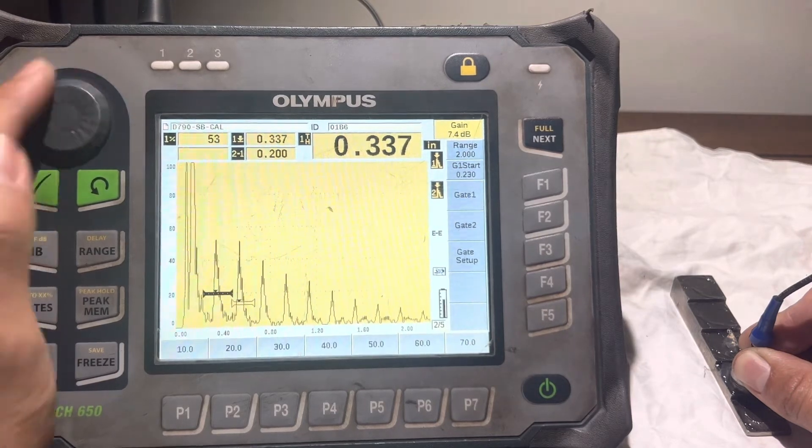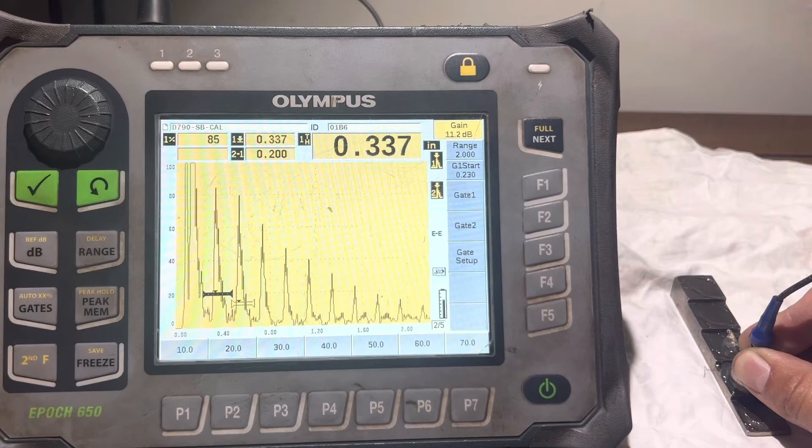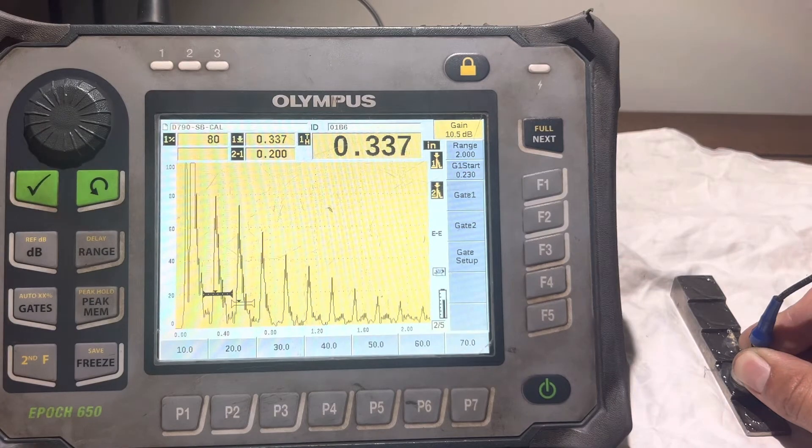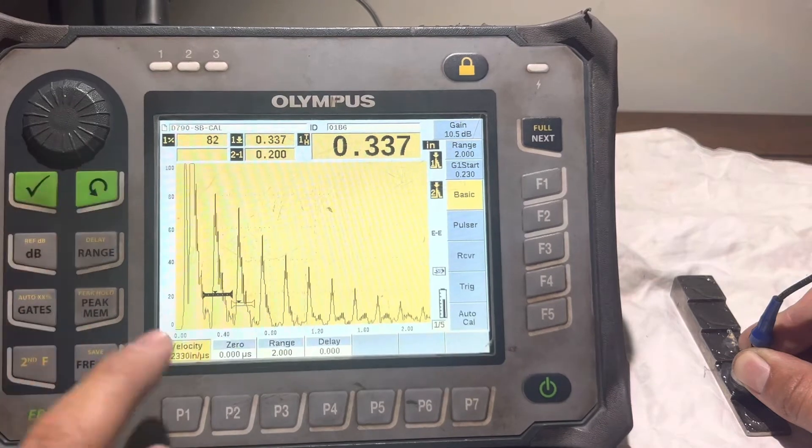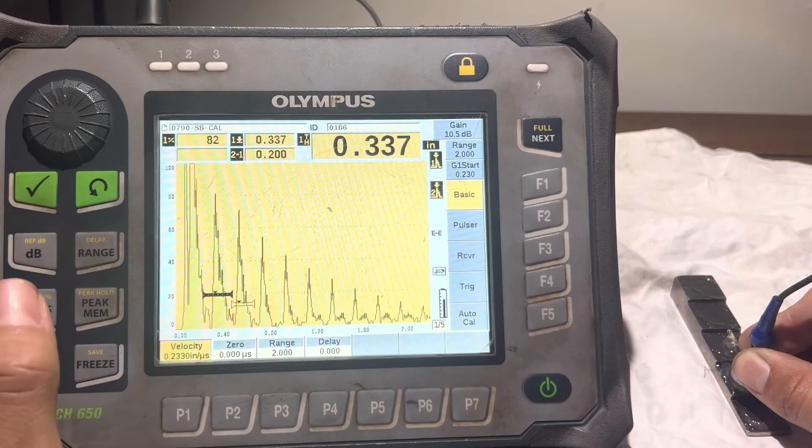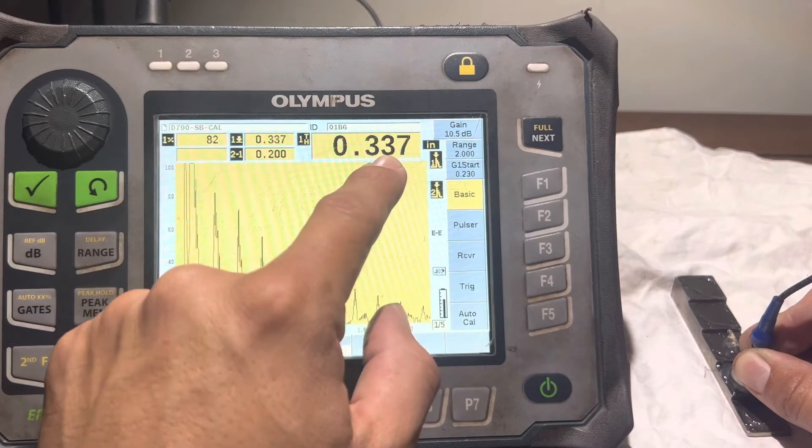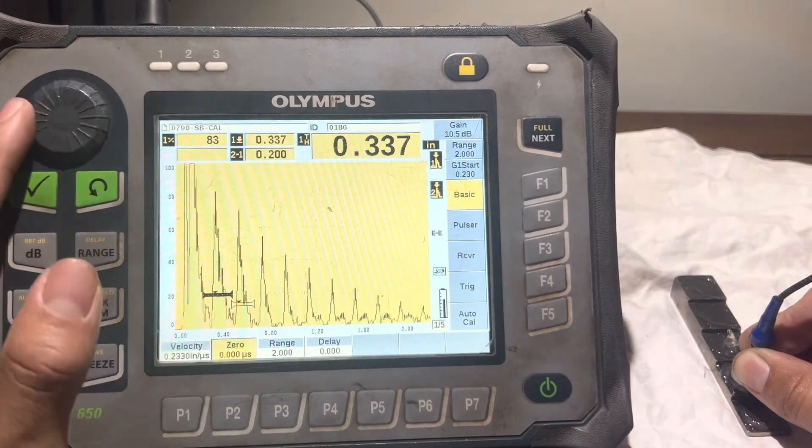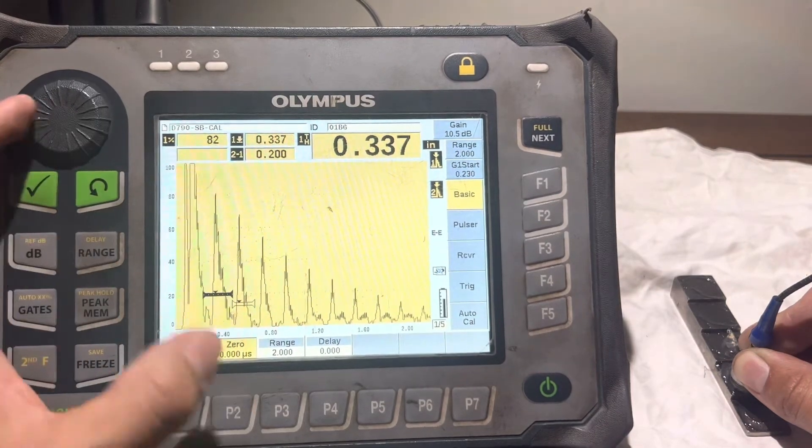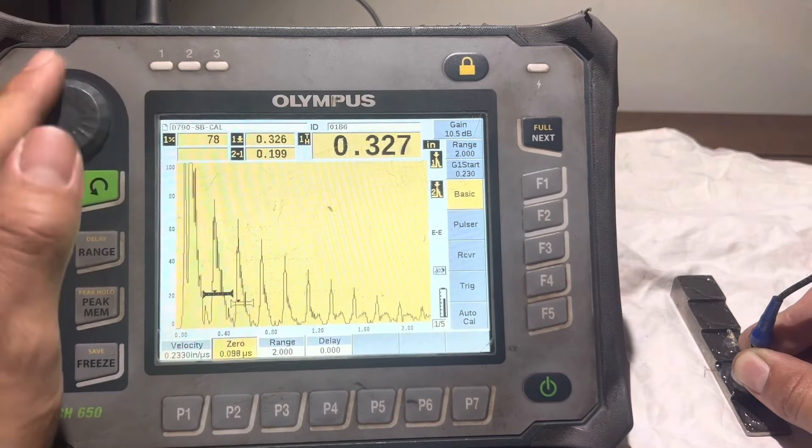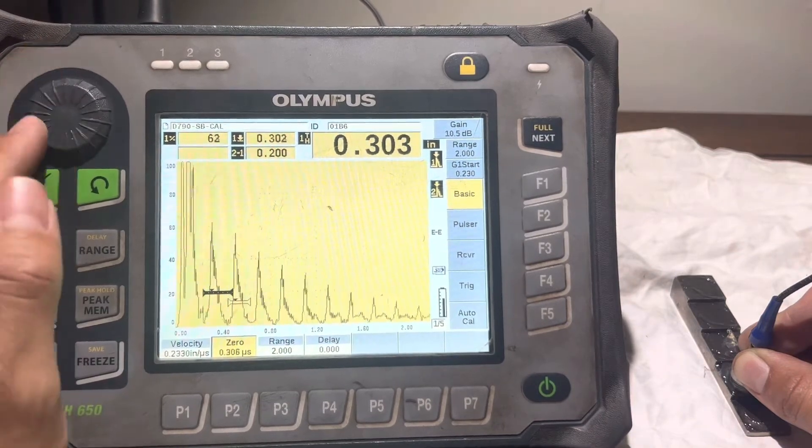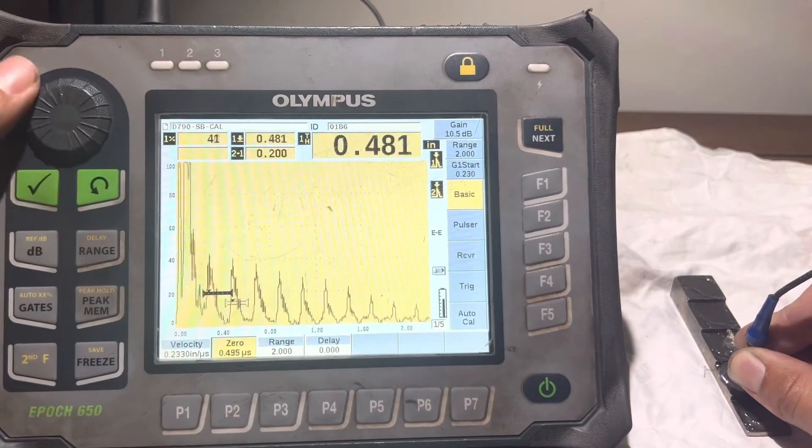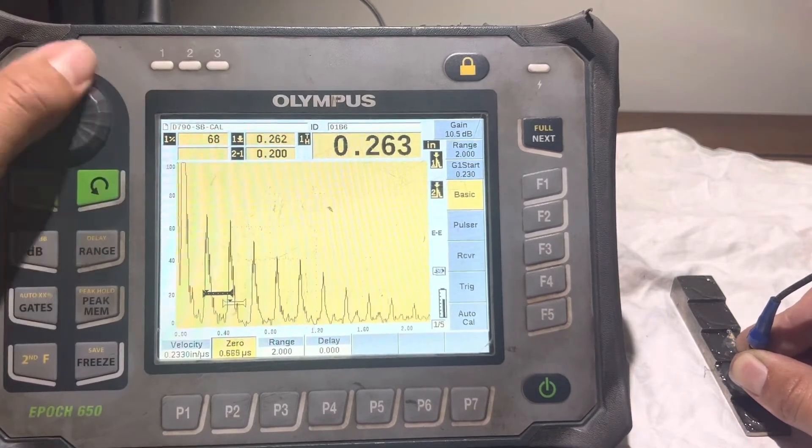We're going to move our gain up to 80 dBs. As you can see, it's out of place. Our echo is good because our velocity is in good standing. So what we have to do is change our zero to make it to where this will be 0.200. I'm adjusting our zero, and this should say 2 when I'm done.